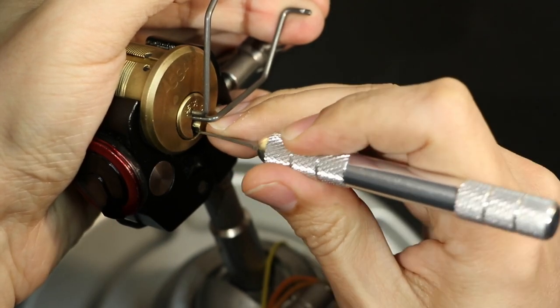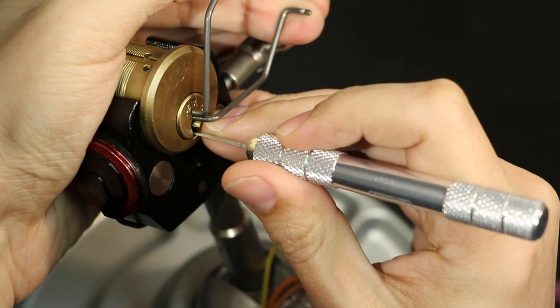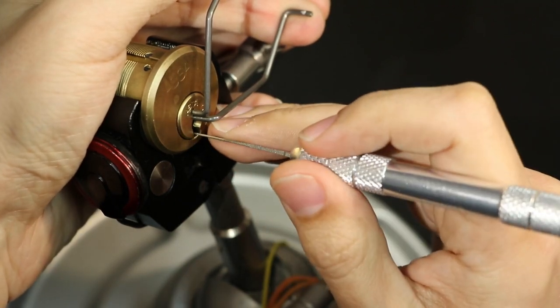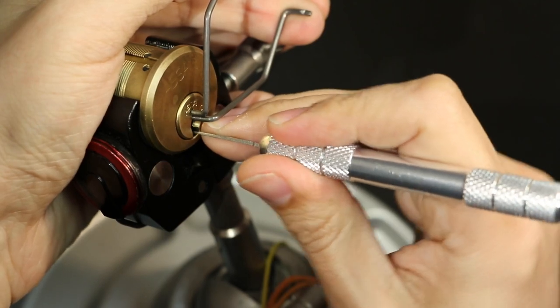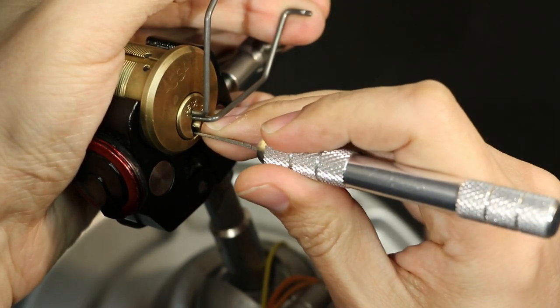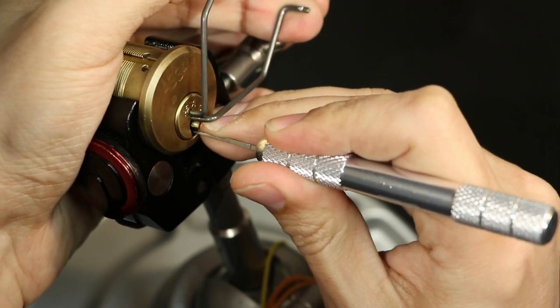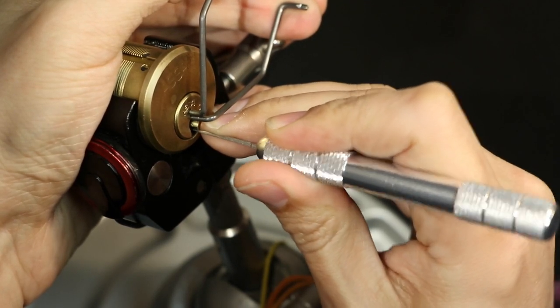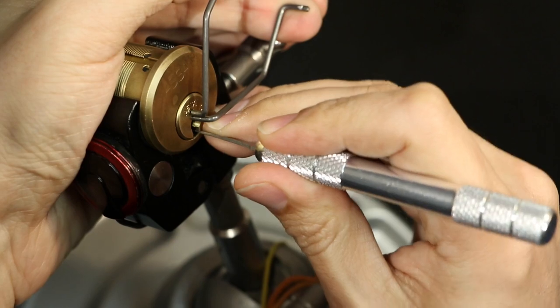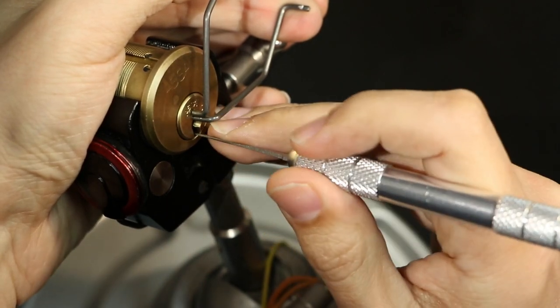So fourth one doesn't feel set. Fifth one feels set. So what is going on? One, two, three. So the fourth one is not set. So I'm going to back off the tension a bit. Because the fourth one is binding hard, meaning it's in a false gate.